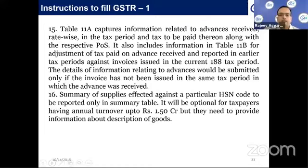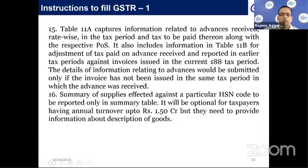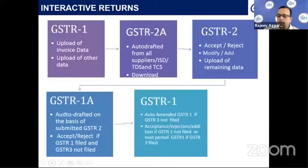A summary of supplies affected against a particular HSN code is to be reported. It is optional for taxpayers with annual turnover up to Rs. 1.5 crores, but they must still provide a description of the goods. HSN codes need not be provided if the value of clearances is less than Rs. 1.5 crores.